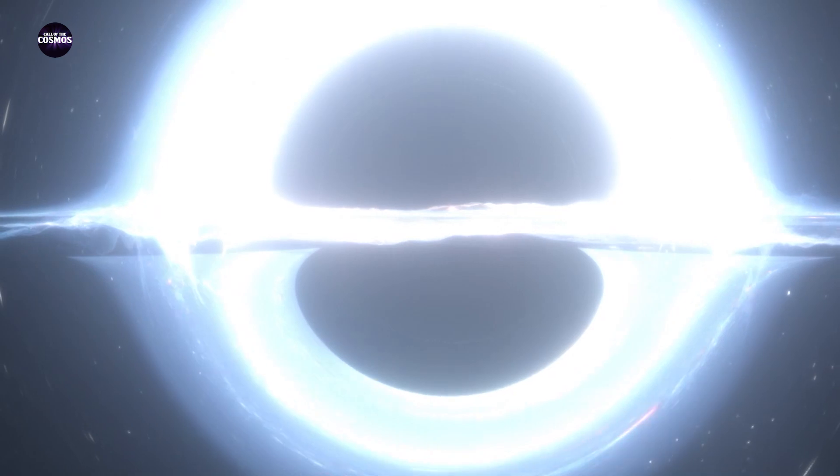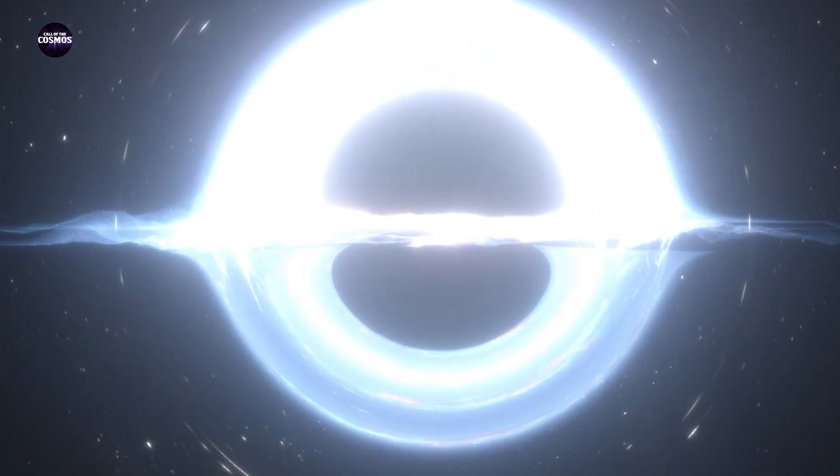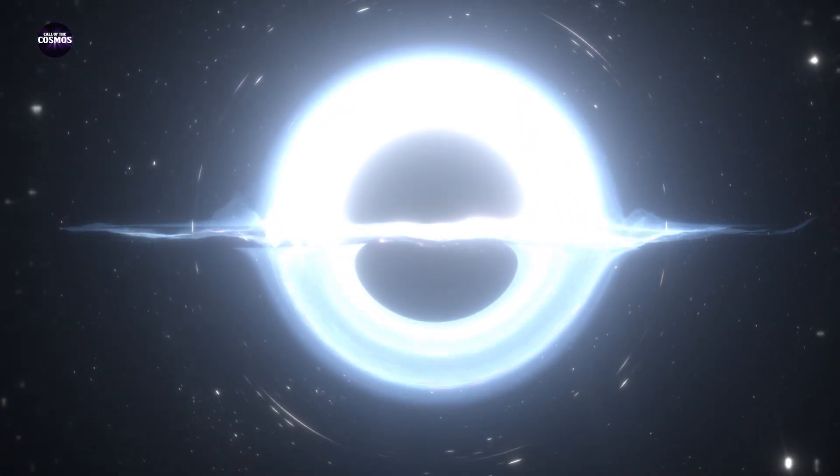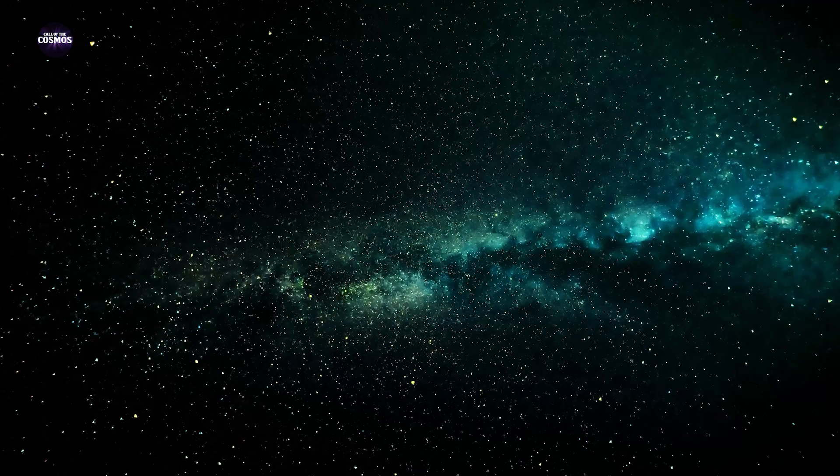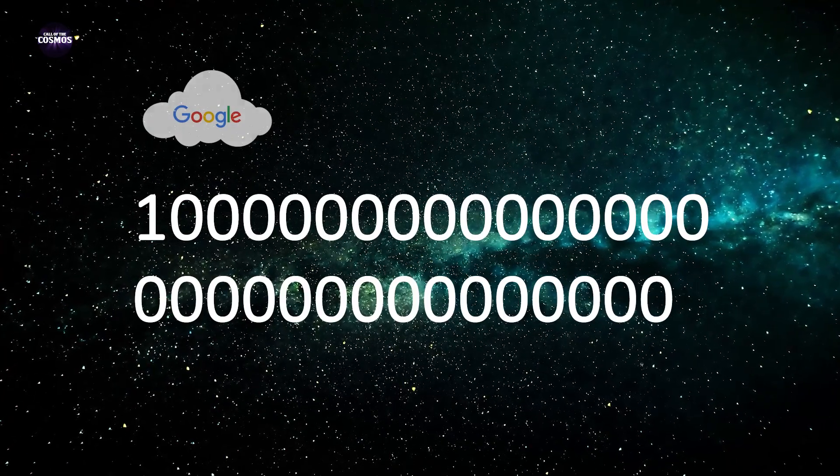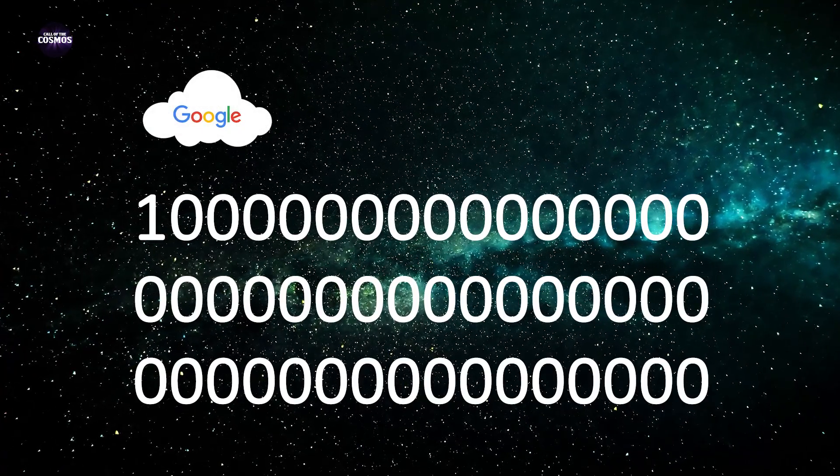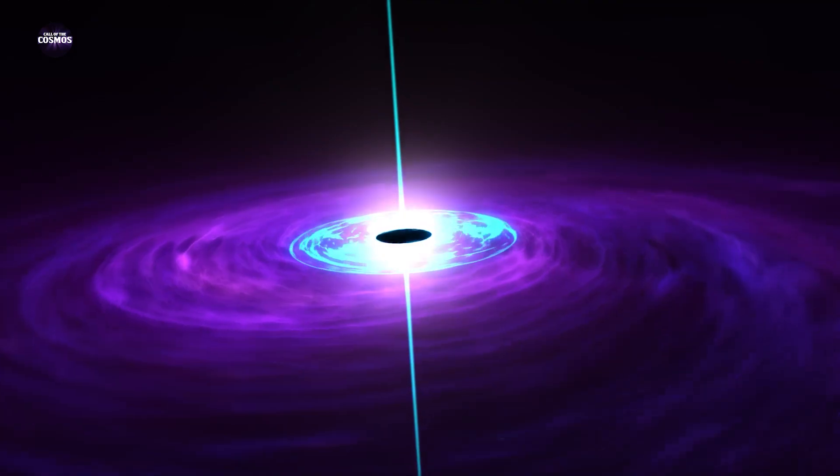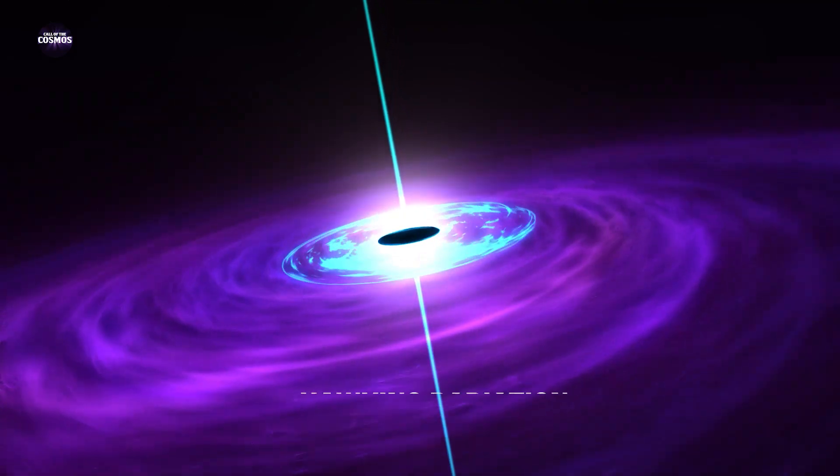And thus, the black hole will lose mass and shrink over many, many humongous numbers of years. In fact, it would take 10 power 100 years or a googol, from which Google derives its name, number of years for a supermassive black hole to radiate all of its mass as energy in the form of Hawking radiation.